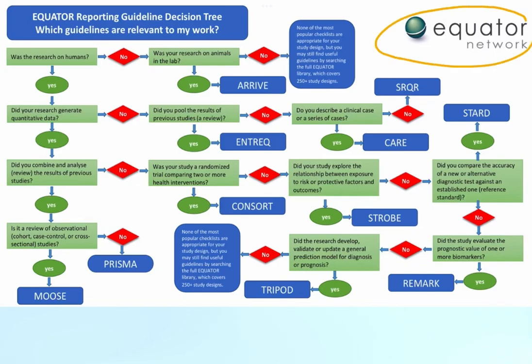equatornetwork.org has collected all the reporting guidelines for research specific to the study design, and they are easily downloadable. These reporting guidelines are based on the study designs. Here is a decision tree based on which we can select the specific guidelines we are supposed to use.